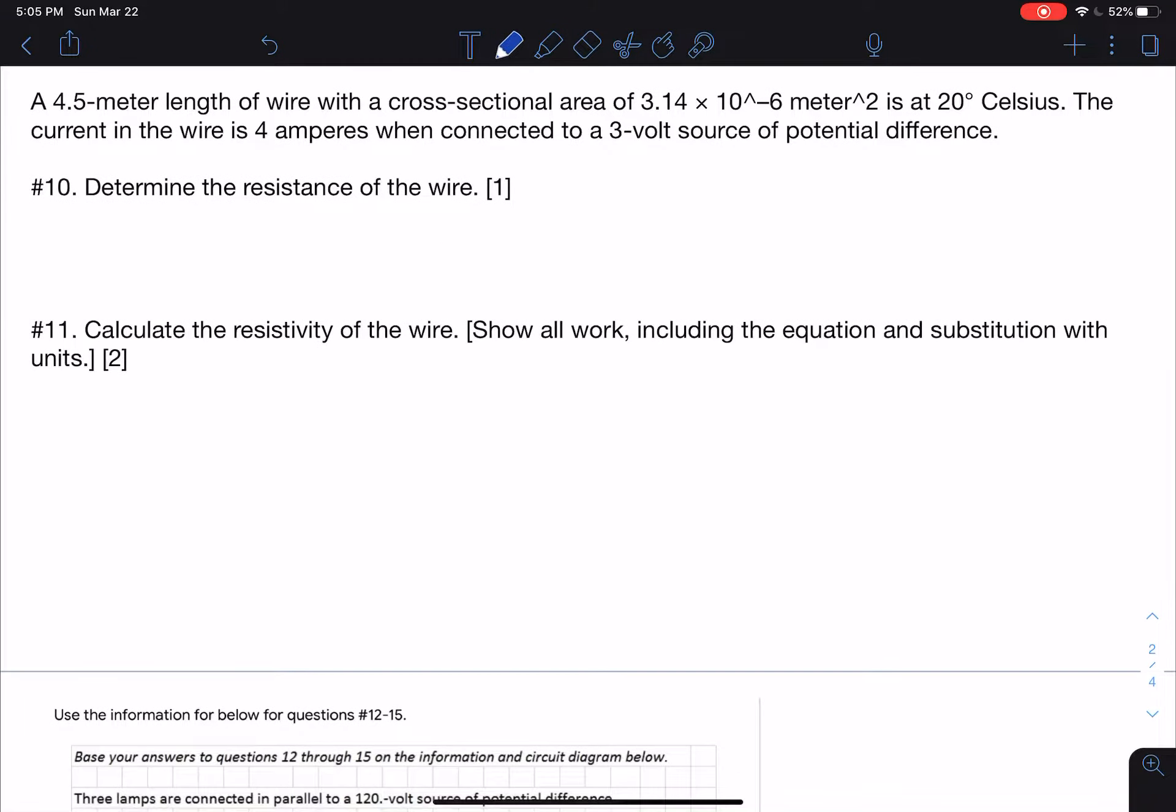Okay, moving on. A 4.5 meter length wire with a cross-sectional area of 3.14 times 10 to the negative 6 meters squared at 20 degrees Celsius. The current in the wire is 4 amperes when connected to a 3 volt source of potential difference. So again, potential difference is a fancy word for voltage, which is the battery. Alright, determine the resistance of the wire.